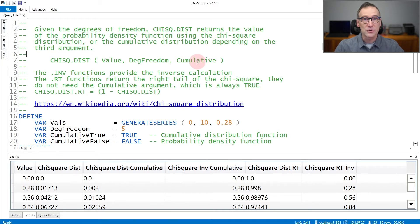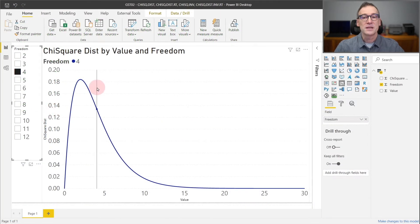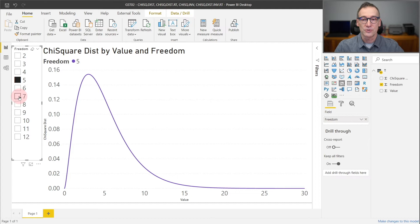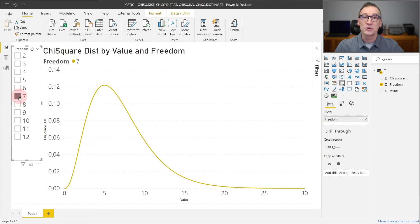It is useful to look at how the degrees of freedom change the shape of the statistical function. This is the distribution with a degree of freedom of four, and you see that if I change it to five or to seven, the shape of the distribution function changes.